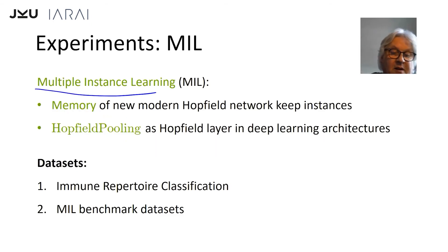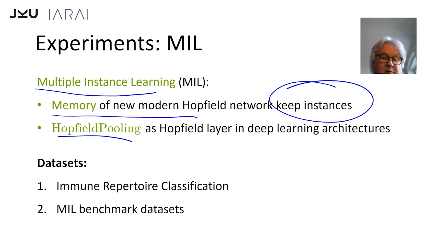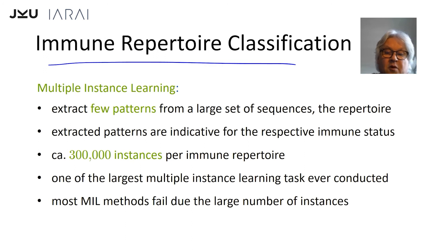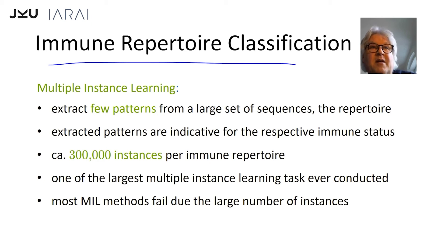The second set of experiments is multiple instance learning. The modern Hopfield network gives you a memory and you can keep the instances of your object in memory. We use Hopfield Pooling for that. For experiments we show results on immune repertoire classification and standard multiple instance learning benchmark datasets. The task: you have a person, extract some immune cells, sequence them, and determine whether this person is immune against a certain disease — think about COVID-19. Some of the cells contain a pattern showing this person is immune against COVID-19, so there are a few key patterns among a large set of sequences.